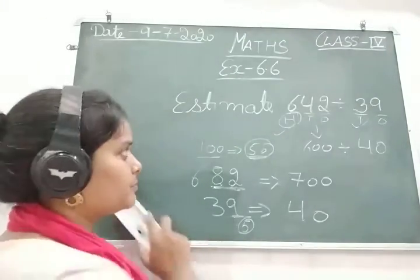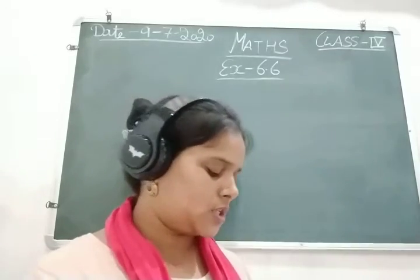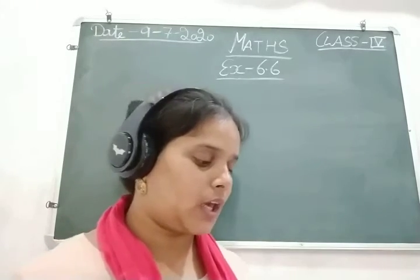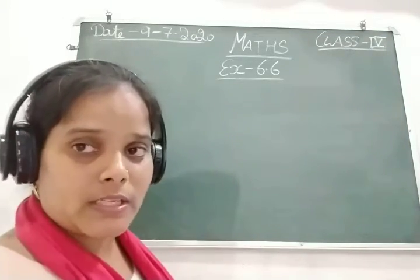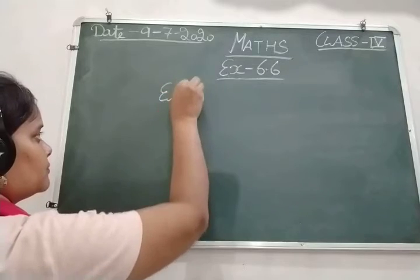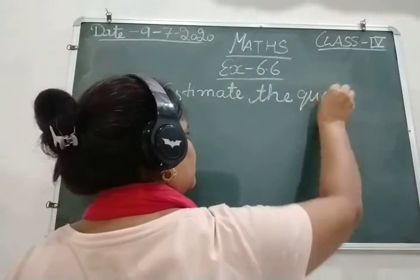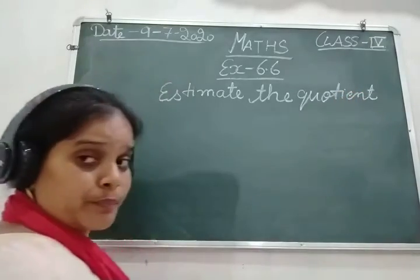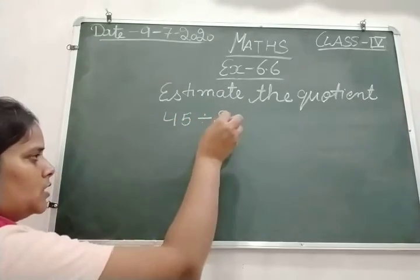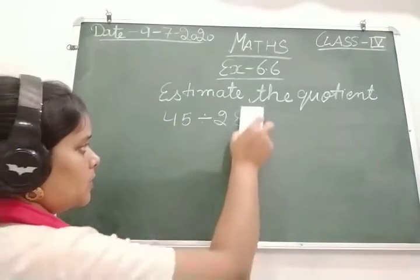So now we will start with Exercise 6.6. Let's start with it. The first topic here is estimating the quotient. So we have to estimate the quotient. I am just giving an example first, then we will start with our sums. So here the question is: estimate the quotient — suppose the number is 45 divided by 23.